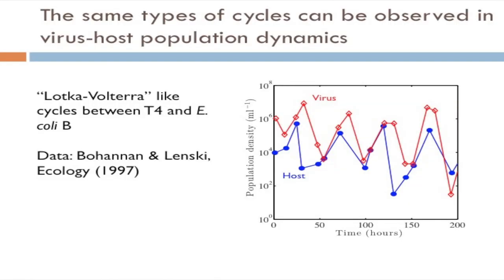These same ideas were imported when the first models of virus-host dynamics were proposed — first by Campbell in the 60s, then by Bruce Levin in the late 1970s with Frank Stewart and Lin Chao. Work by Bohannan and Lenski showed population density over time in hours: host population and virus population. You see that characteristic shift where the host peak is followed by, or at least coincident with, the virus peak — classic predator-prey dynamics, even though the predator here is a virulent phage that infects, kills, and releases progeny.